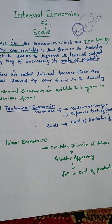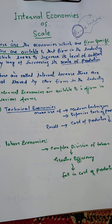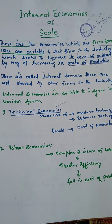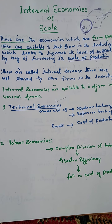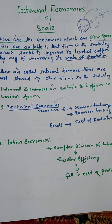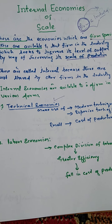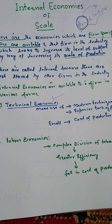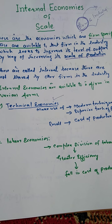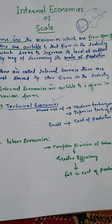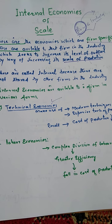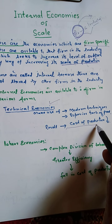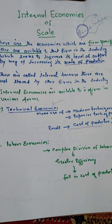Internal economies are available to a firm in various forms. The first form is technical economies. Jab ek firm apni scale ko badhati hai, us ke liye possible ho jata hai ke woh modern technology ka istemaal kare, superior techniques adopt kare, nayi innovations implement kare. Jab modern aur superior techniques ko adopt karte hain, is se hamara cost of production kam hota hai aur output badhta hai.